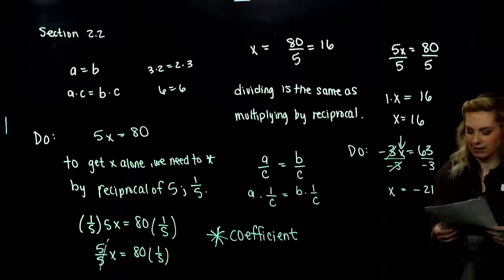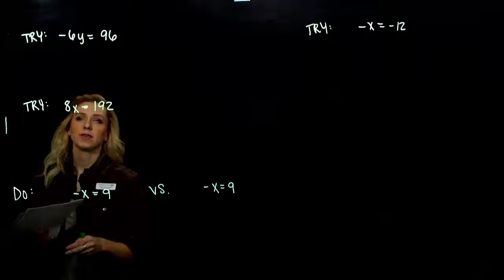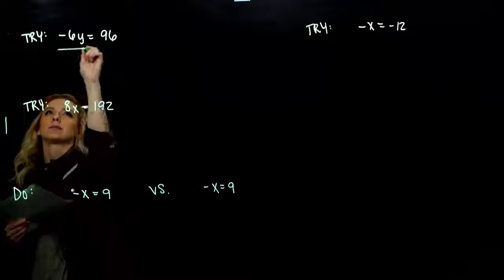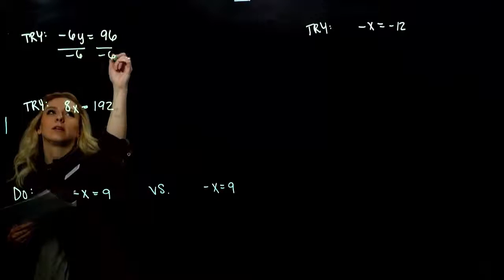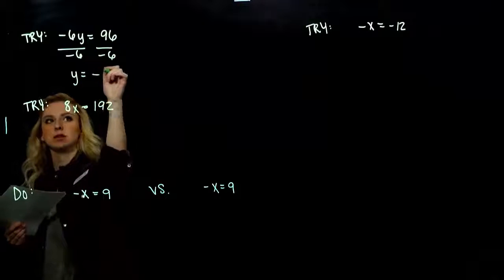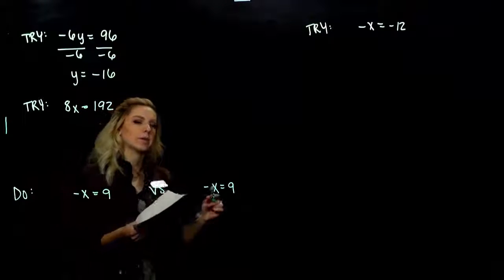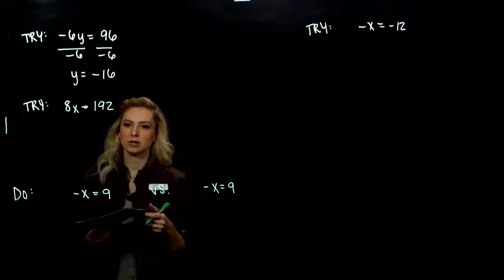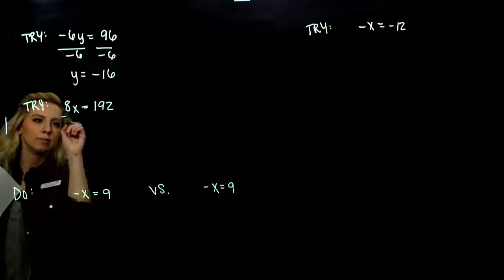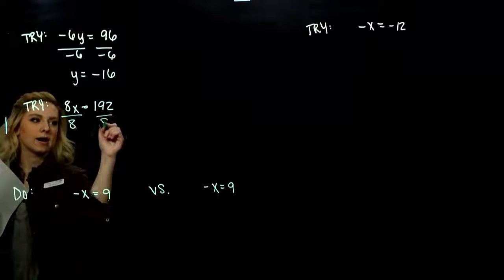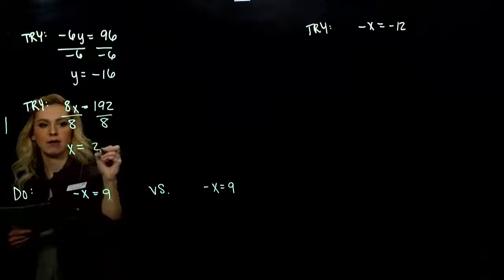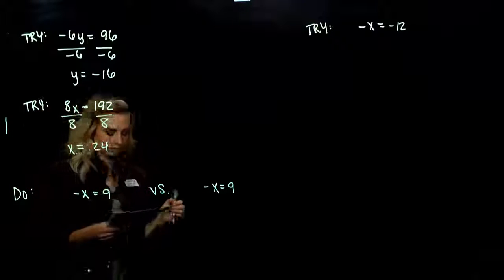Two for you to try. For the first example, y is attached to a negative 6, so we need to divide both sides by negative 6. You should have gotten y equals negative 16. Again, we can always plug it back in and check using the original equation. For the second one, you divide both sides by 8, so x equals 24.